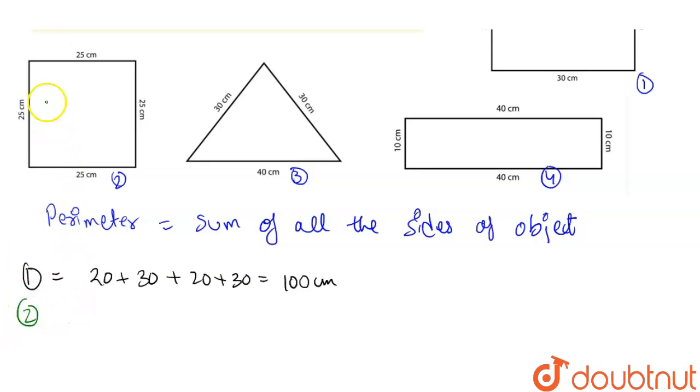So for the second one, it will be 25 plus 25 plus 25 plus 25. It is a square. So 25 plus 25 plus 25 plus 25, which equals 100 centimeter.